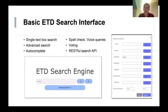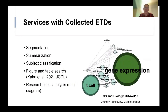We have a lot of ETDs, so what can we do with them? We can build a lot of services. The first is segmentation, where we can chunk big ETDs into smaller sections. The second is summarization, where we can summarize long ETDs into shorter paragraphs so users don't need to read the whole document. We can also classify subject categories, extract and search figures and tables, and do research topic analysis. For example, a named entity extraction tool called Wikifier was used to extract named entities from computer science and biology ETDs, showing many co-listed named entities across these two domains.